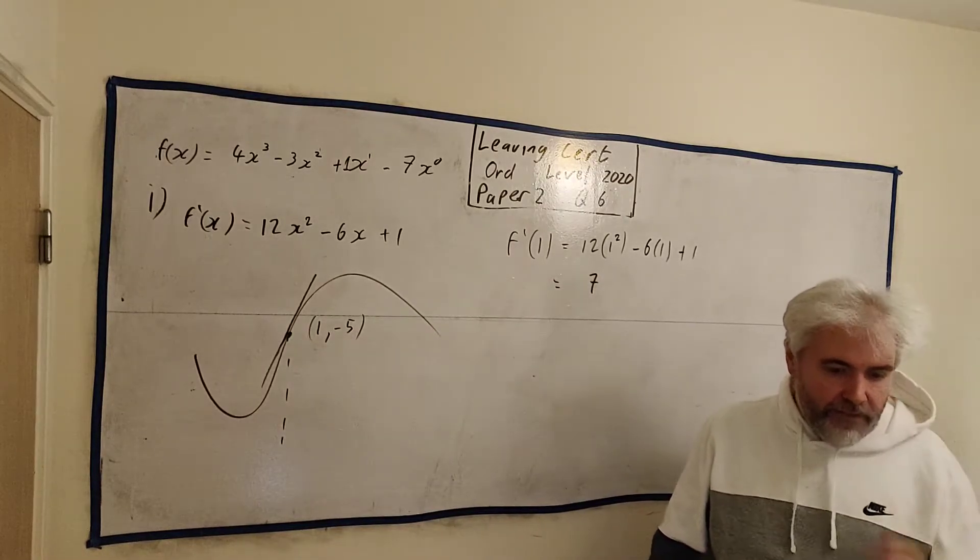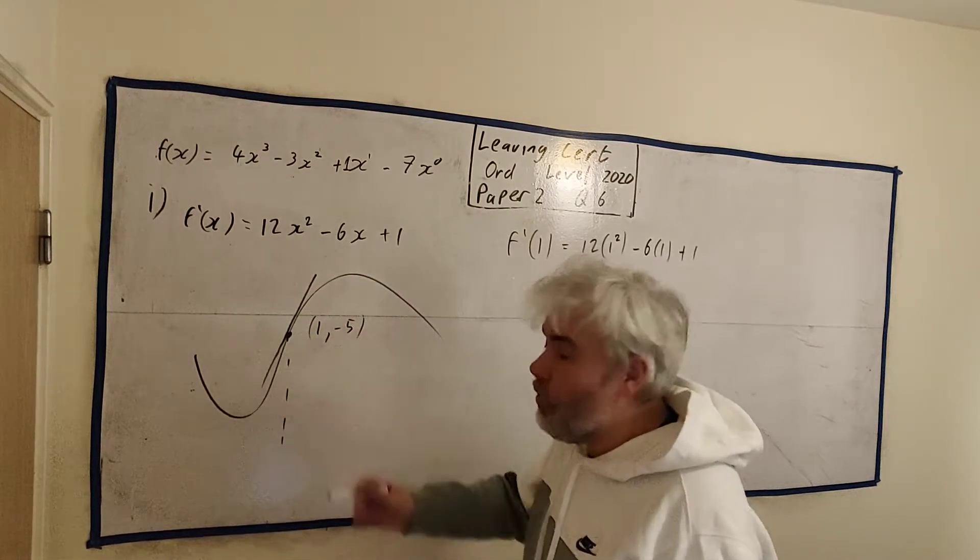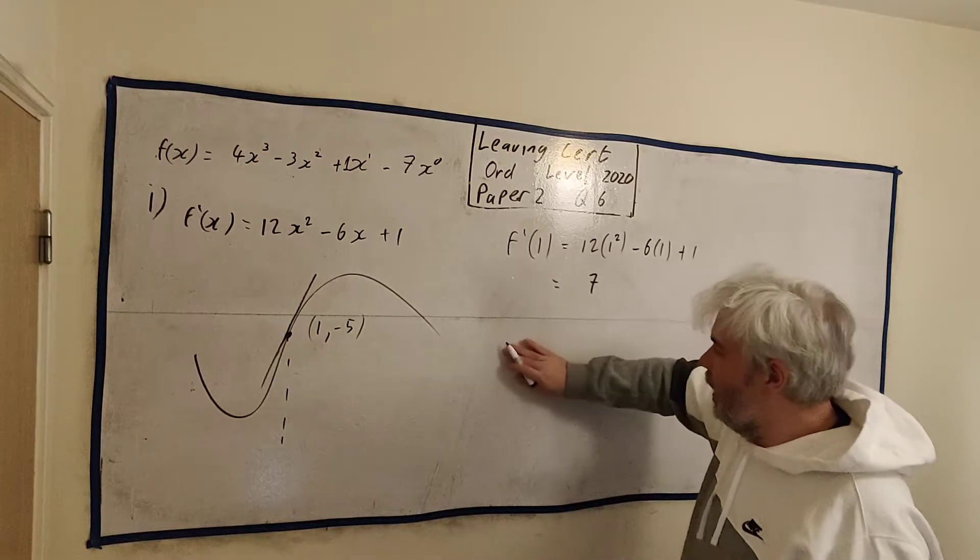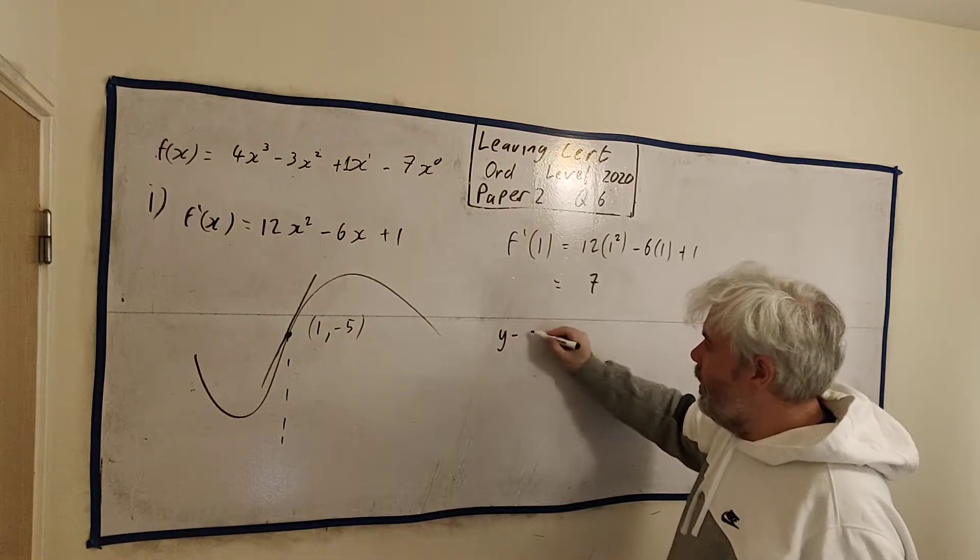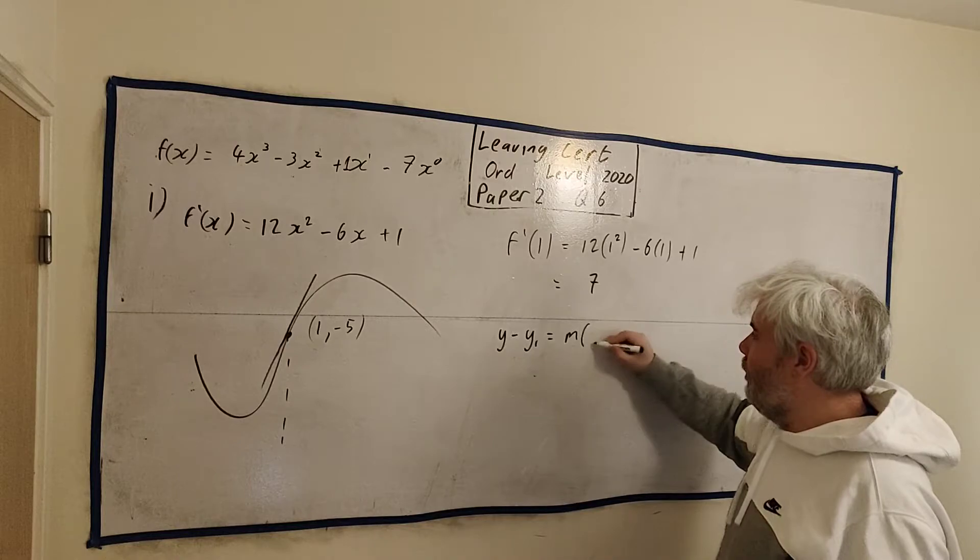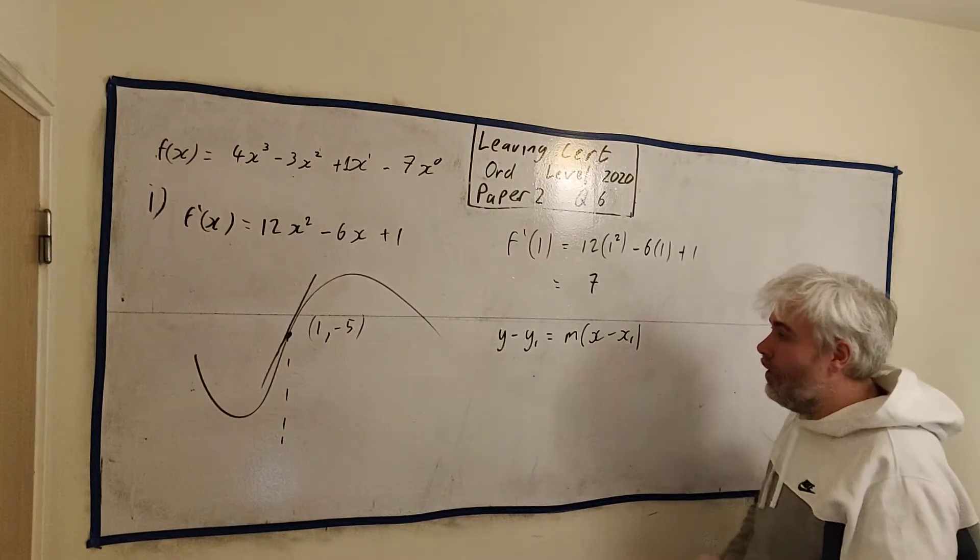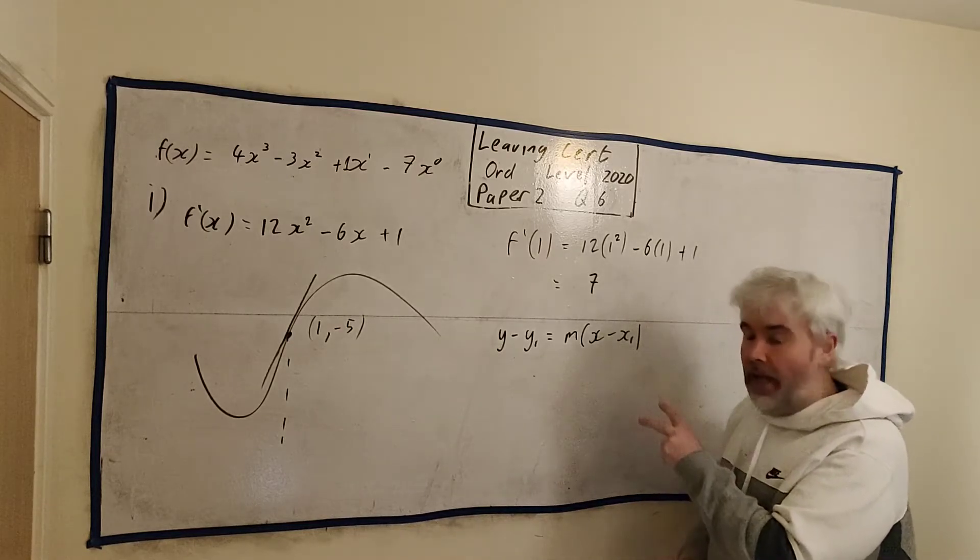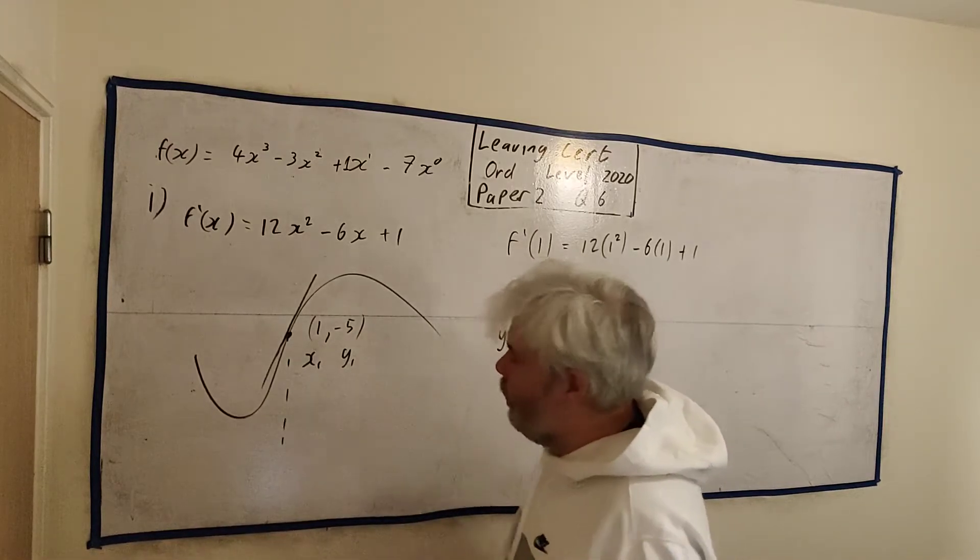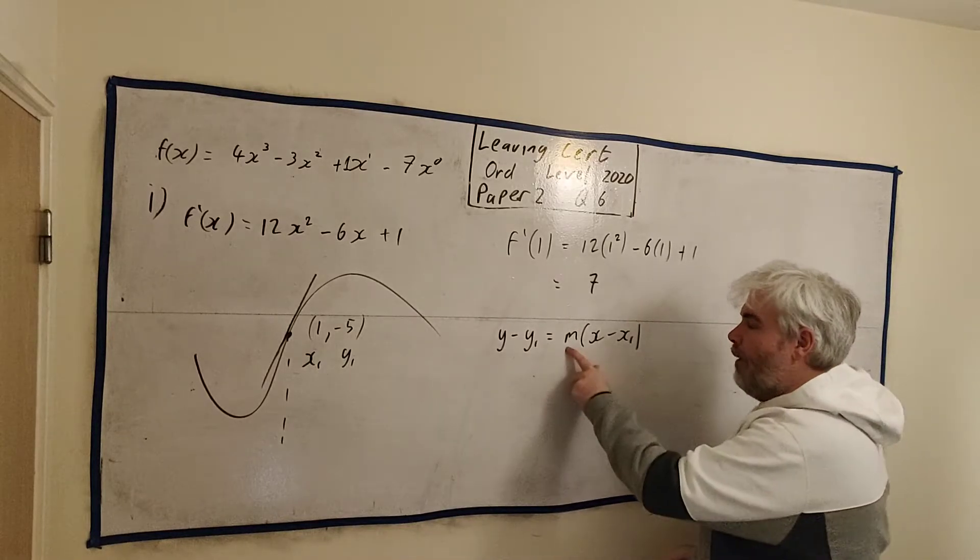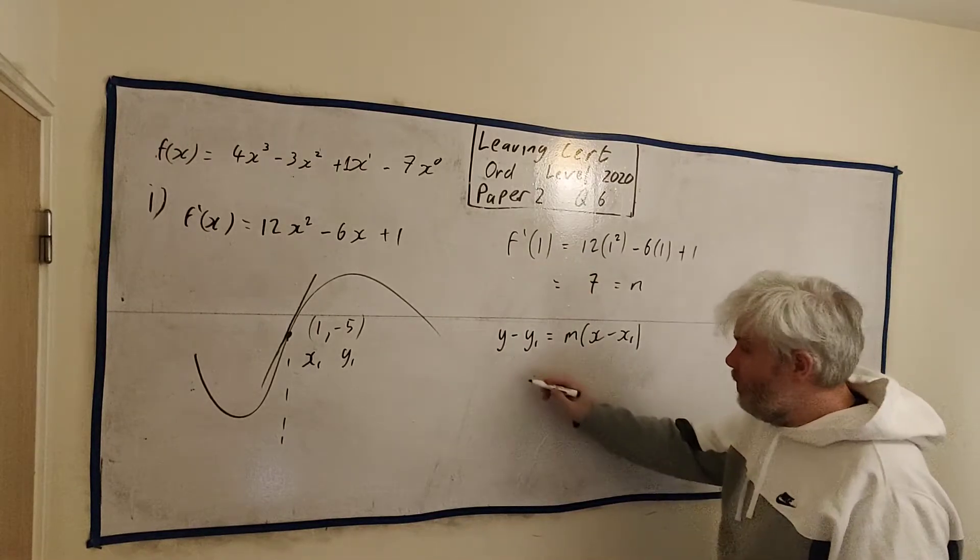The last part asks us to find the equation of a tangent. So this line I drew here, this is the tangent. They want the equation of that. Now we know how to get the equation of a line. If you don't remember, it's in your formula book. It's y - y₁ = m(x - x₁). That's the equation for the line. All you need to do this is any point on the line, that's x₁ and y₁. Well, we have a point on the line. And we need the slope m. That's good because we just found the slope.